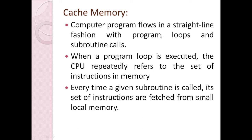If there are loops, certain lines of code are executed again and again. For example, if we move from line one to five and there is a loop at five, we will run six, seven, eight, then again five, six, seven, eight, and so on. Similarly, if there is a subroutine call, the program transfers to some other location — say location 100 — executes a few lines there, then returns back. If the same subroutine is called again, the same lines of code are executed again.